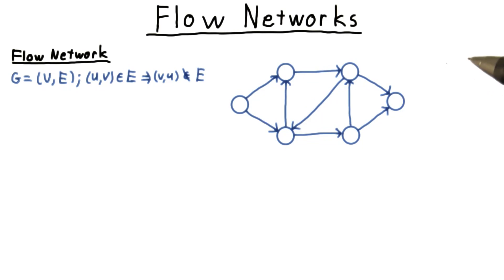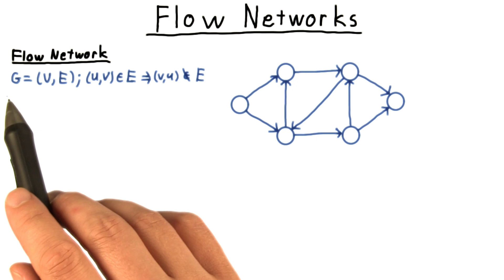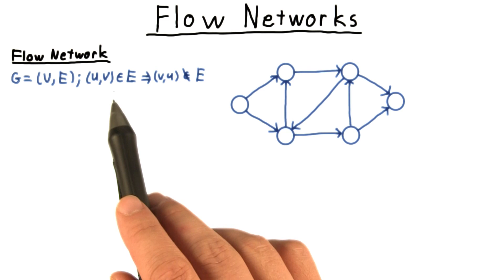We begin with a definition. A flow network consists of, among other things, a directed graph G. We will disallow anti-parallel edges to simplify some of the equations. This is not a serious limitation, as we'll see.